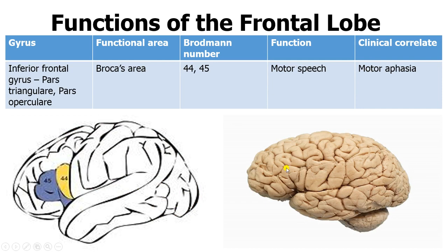The dominant hemisphere has two main parts in the inferior frontal gyrus: the triangular part known as pars triangularis, and the border of the lateral sulcus known as the opercular part or pars opercularis. These two in the dominant hemisphere form what we call Broca's area, or area 44-45, and they're involved in motor speech. If you damage this area in the dominant hemisphere, what you get is motor aphasia — basically the inability to articulate your words comprehensively.